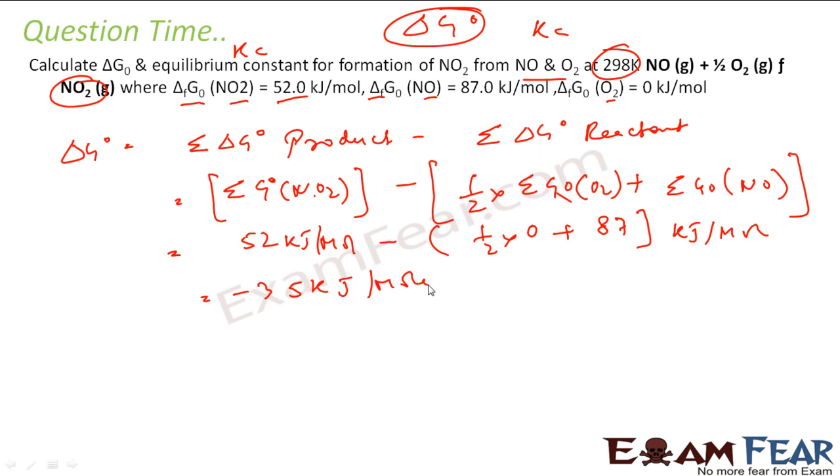Now I have to find K. I know delta G naught is nothing but minus 2.303 RT log K, or RT ln K, same thing. Instead of ln, I am using log, so I am multiplying with 2.303.